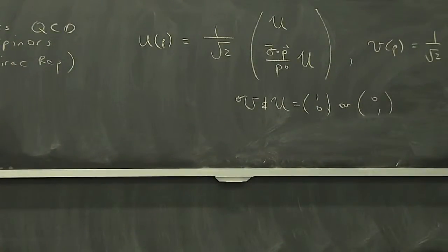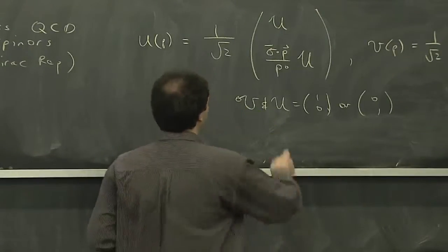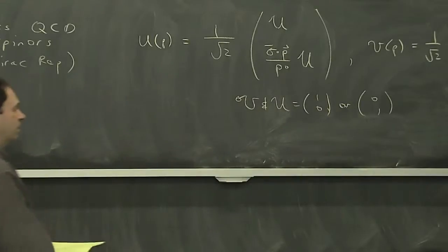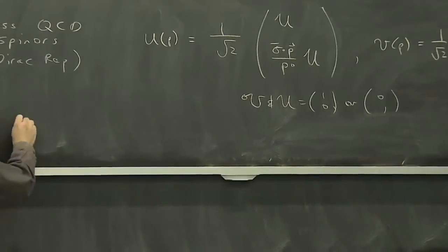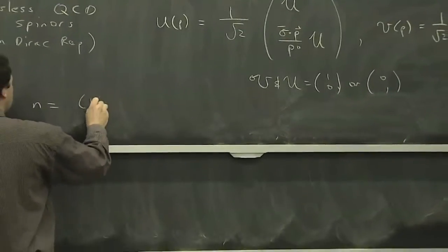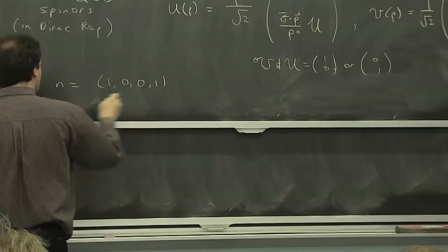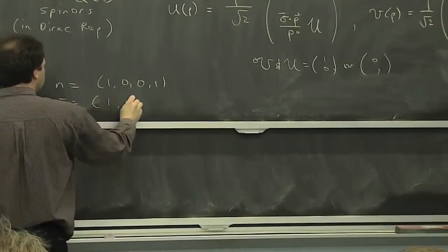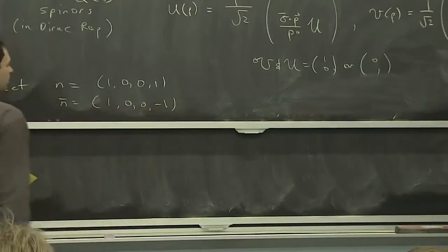So what we can do here is we can expand, and you see that what happens when you expand is that you can think about the P3 vector being larger than P1 and P2. So let's just let our n be 1, 0, 0, 1, and our n bar be 1, 0, 0, minus 1, so they're back to back with each other.